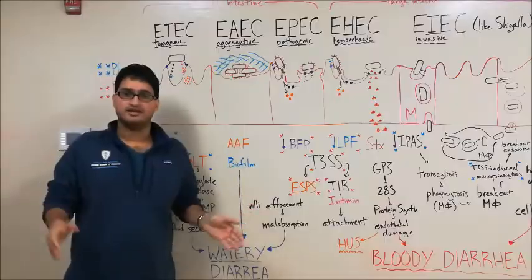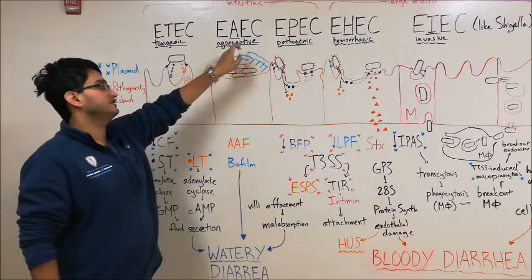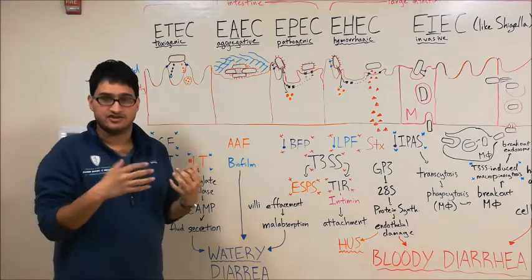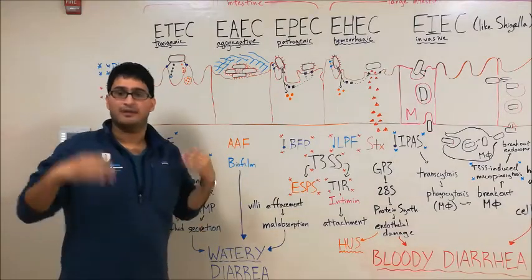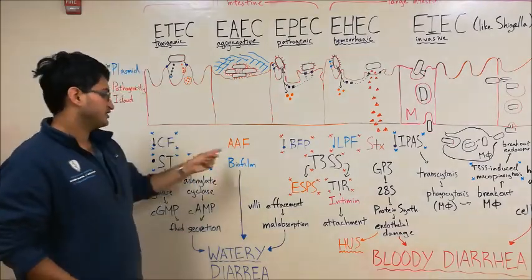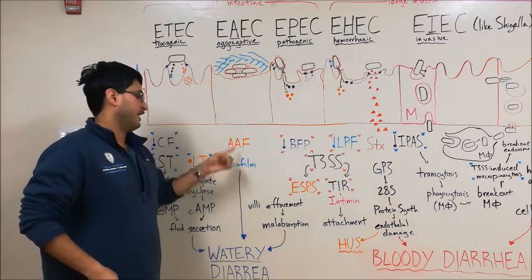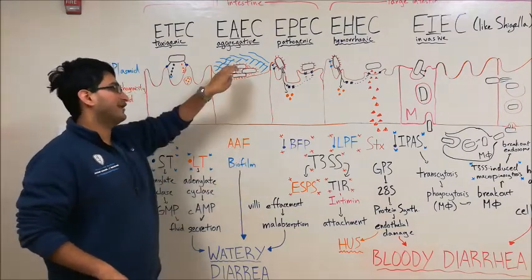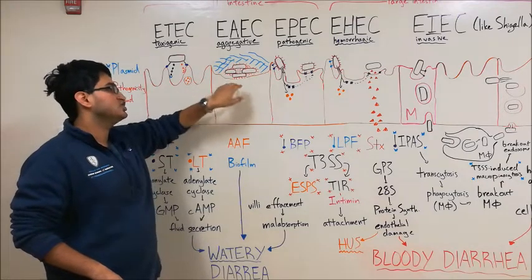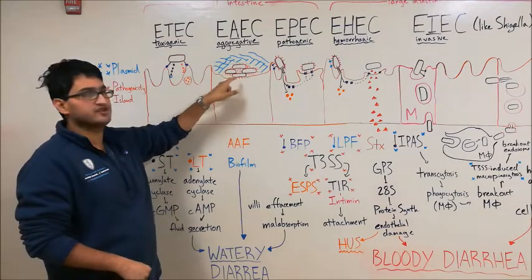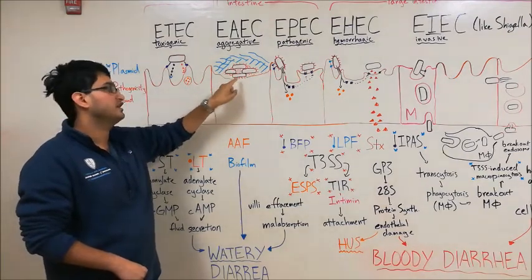So now let's talk about EAEC, or enteroaggregative E. coli. As the name suggests, this is going to be forming a lot of aggregations of individual E. coli bacteria. Using its specialized pilus, called AAF, aggregative adhesive fimbriae, the E. coli are going to adhere to the enterocytes, but they're also going to aggregate with each other, as indicated by these little orange things coming off each individual bacterium.